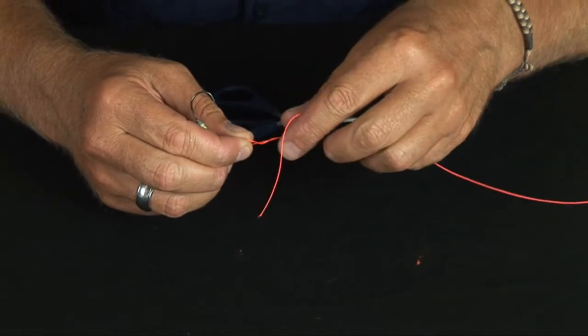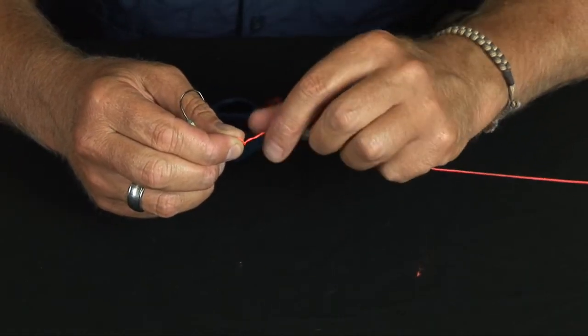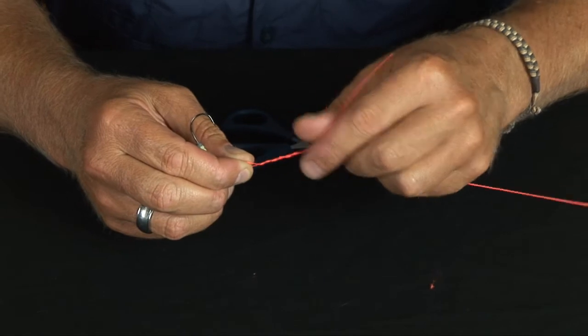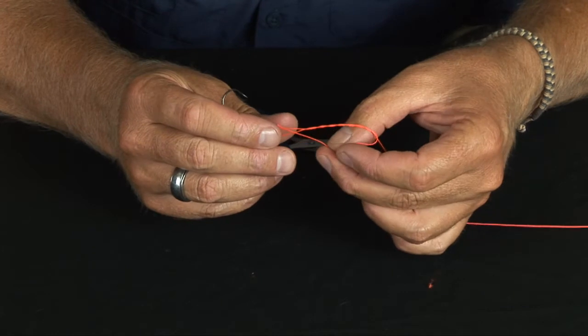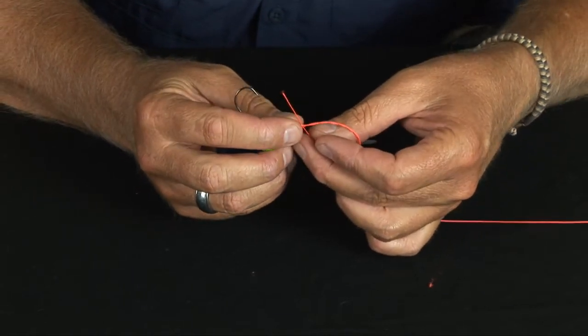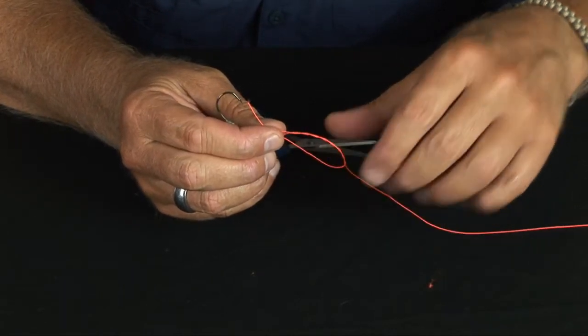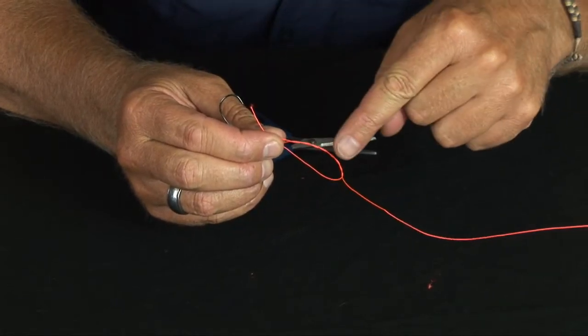Then go back through that loop you've created between your fingers. You'll have another loop at the top—that's the secret. Go back through that loop.